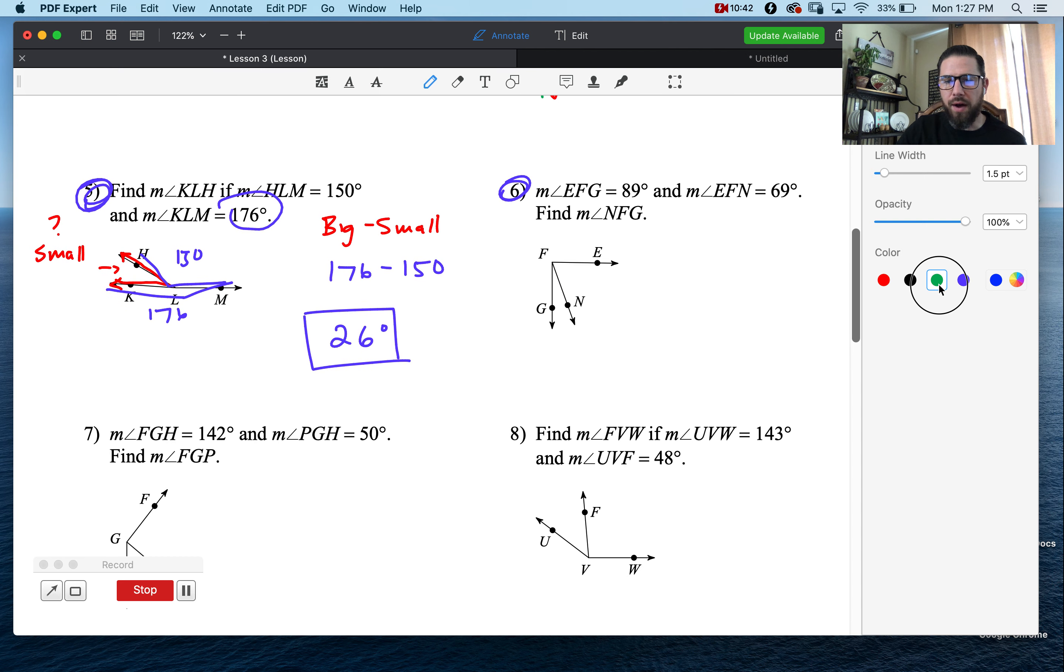Number six. What do they want us to find? Find NFG. NFG, that's a small piece. If they want us to find the small piece, we're going to take the big minus the small. Our big is 89. Our other small is 69. And 89 minus 69 is 20 degrees.